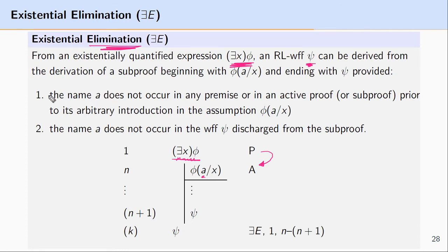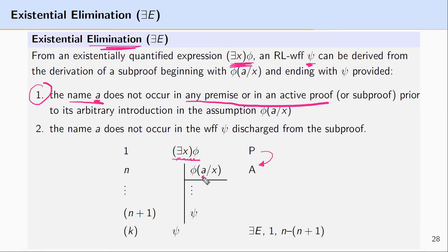But the names we pick have to meet certain restrictions. Namely, the name A — let's say we picked A — cannot occur in any premise or any active part of the proof. A somewhat simplified way of thinking about this is: when we make an assumption based upon the existentially quantified expression, this name needs to be foreign, arbitrary, or not already found in the proof.